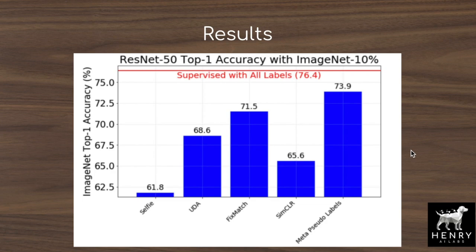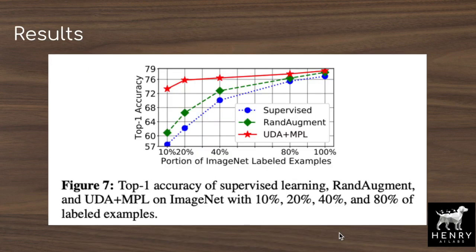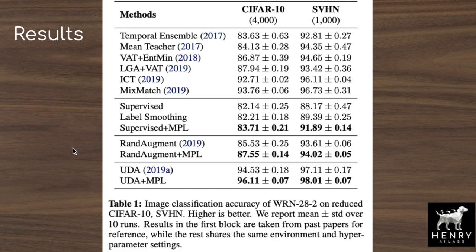In the limited data setting — 4,000 labeled images in CIFAR-10, 1,000 in SVHN, or 10% of ImageNet labels — MetaPseudoLabels is compared against supervised learning, SimCLR, FixMatch, and Unsupervised Data Augmentation. A plot shows that with smaller percentages of labeled data, UDA plus MetaPseudoLabels achieves huge gains over supervised learning and RandAugment. A table further shows gains in CIFAR-10 and SVHN limited data settings when stacking MPL with label smoothing, RandAugment, and UDA.